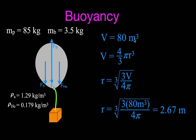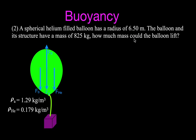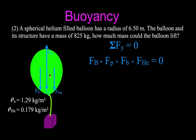So the balloon needs to be about 2.5 meters in radius — about 5 meters all the way across. That's the answer to example one. For example two, we have a spherical helium-filled balloon with a given radius of 6.5 meters, and the balloon and supporting structure have a mass of 825 kilograms. We want to know how much mass this balloon could lift. We use the same free body diagram approach and sum the forces the same way.